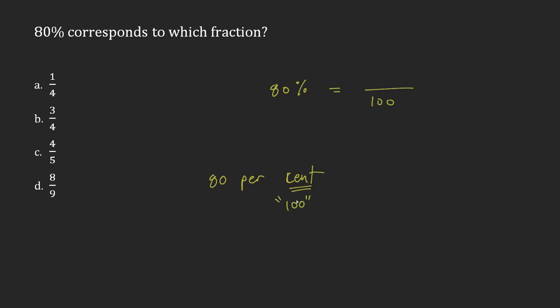There are 100 cents in a dollar. A cent refers to this 100, so it's 80 per cent. And the per sign is also represented like this. So really it's just 80 per 100. A percent is automatically already a fraction. It's a fraction where it's over 100.